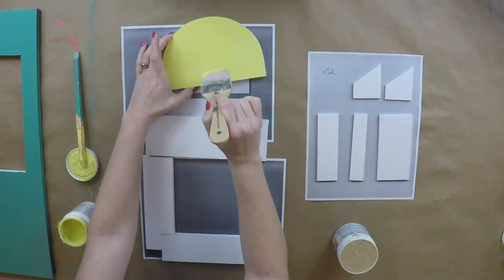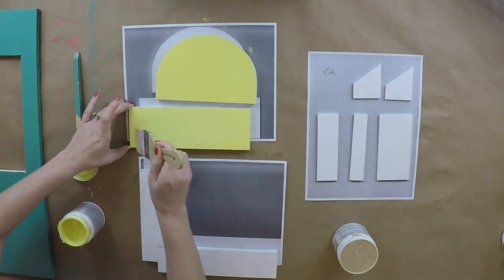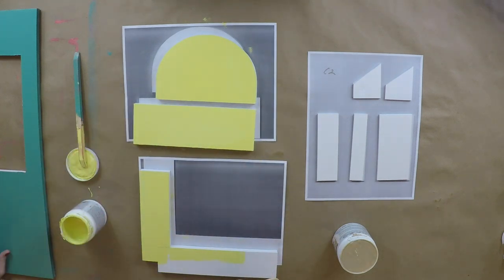When you're painting foam board, you want to do thin, quick strokes. You don't want to get any one spot too wet, because then it might warp.